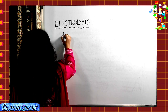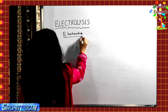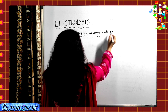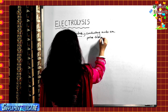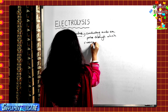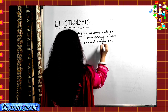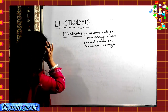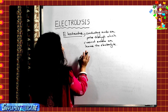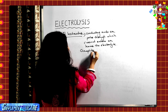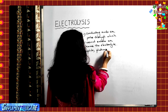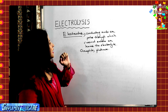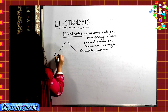Now let's come to electrodes. Electrodes are conducting rods or poles through which current enters or leaves the electrolyte. Graphite, which is an allotrope of carbon, and platinum are generally used as electrodes because they are non-reactive - we don't want the electrolyte to react with the electrodes. There are two types of electrodes: anode and cathode.